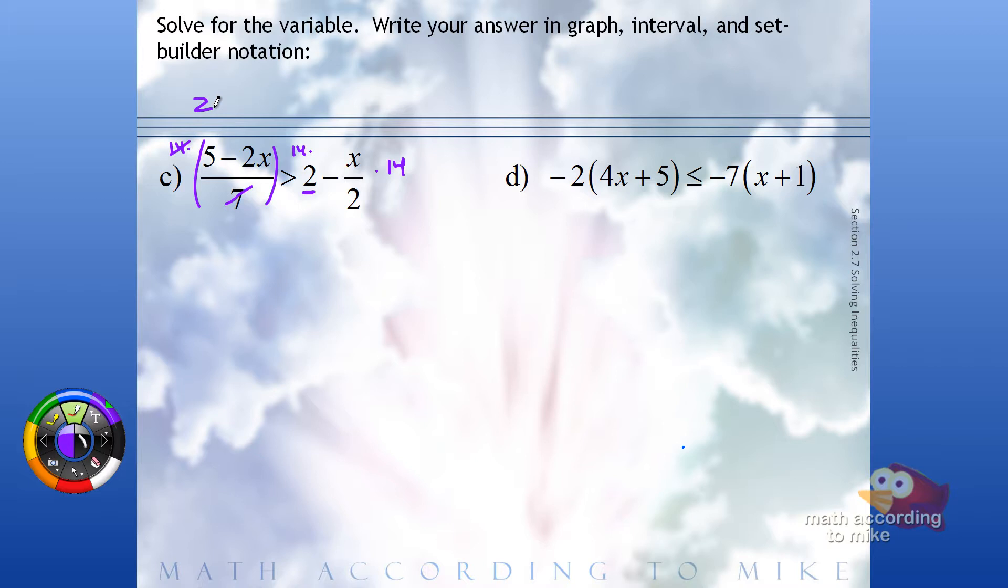In that denominator, there's a 1. We just don't write it anymore. But since there's two terms in the numerator, you have to distribute that 2 through. So for right now, I'm just going to use parentheses. If you want to put that through now, that's totally fine. Since we multiply by 14, which is positive, we don't change the order of the inequality.